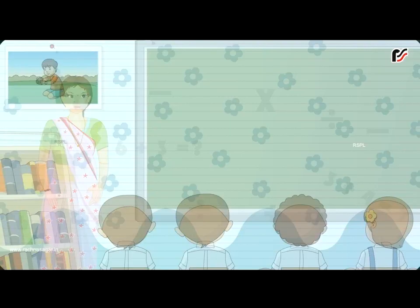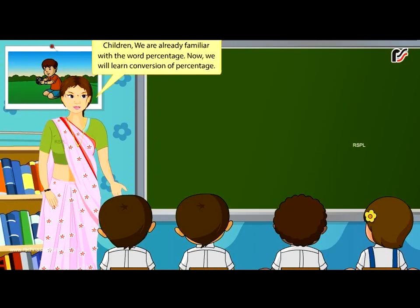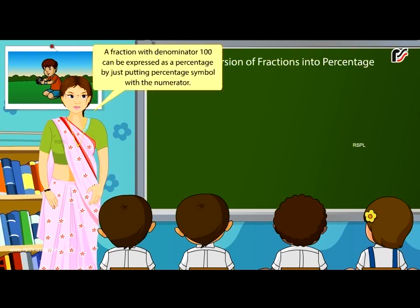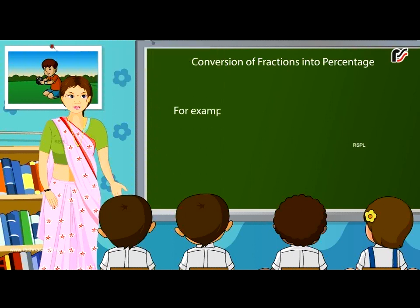Conversion: We are already familiar with the word percentage. Now we will learn conversion of percentage. A fraction with denominator 100 can be expressed as a percentage by simply putting the percentage symbol with the numerator. For example, 20/100 = 20% and 50/100 = 50%.